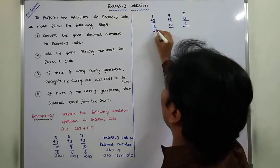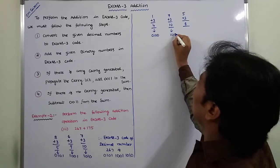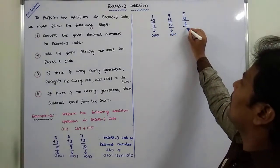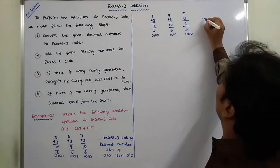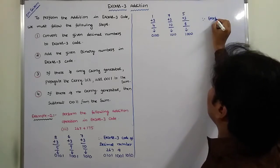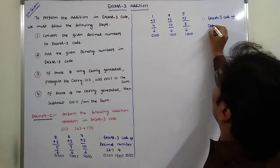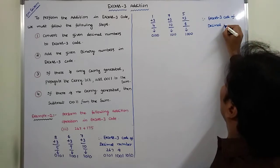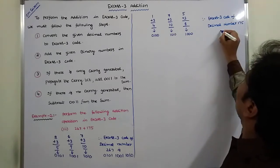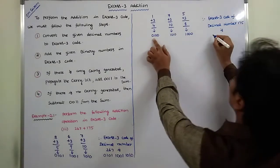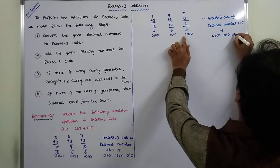The equivalent binary numbers are: 4 is 0100, 10 is 1010, and 8 is 1000. Therefore, the XS3 code of decimal number 175 is 0100, 1010, 1000.